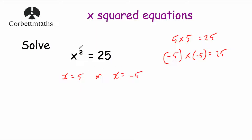Equations that involve x squared will often have two solutions — sometimes they have just one solution, and sometimes they actually have no solutions at all. There is actually a symbol in maths for where we have 5 or negative 5: it's called the plus or minus symbol. Sometimes you'll see that x equals plus or minus 5.